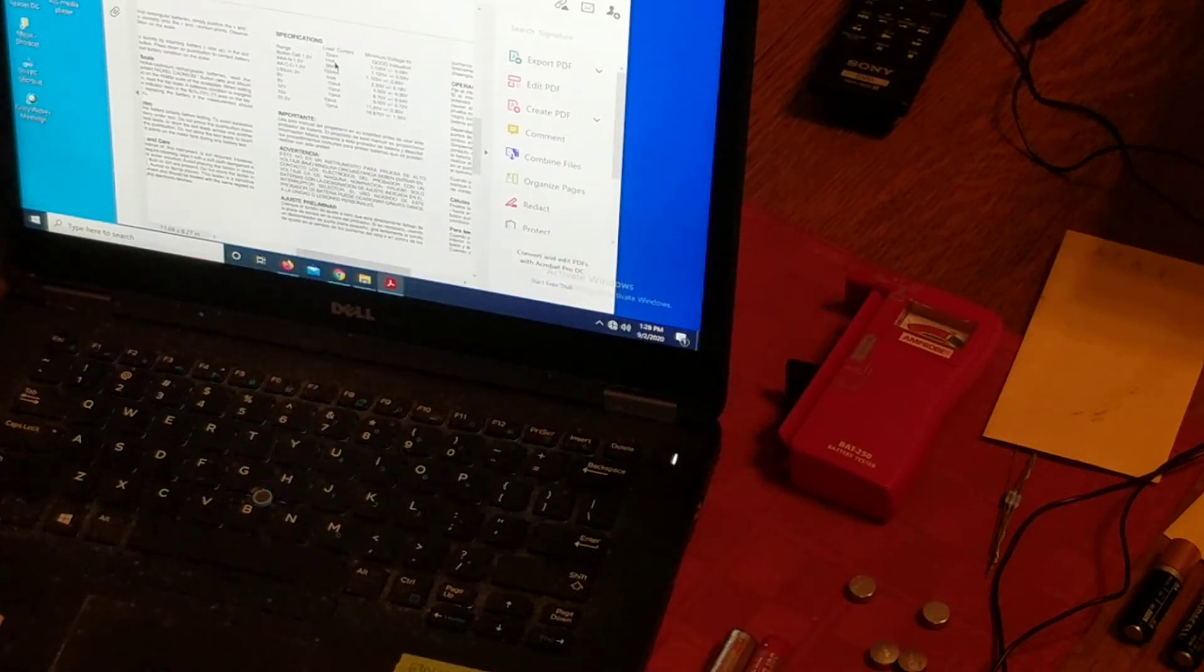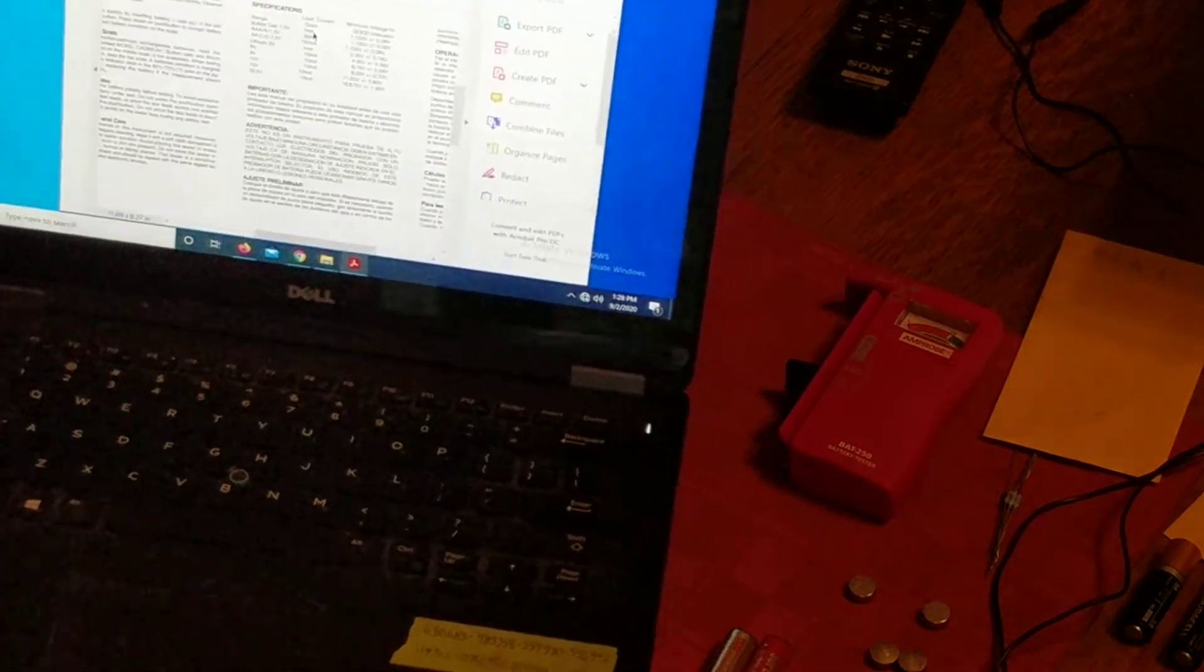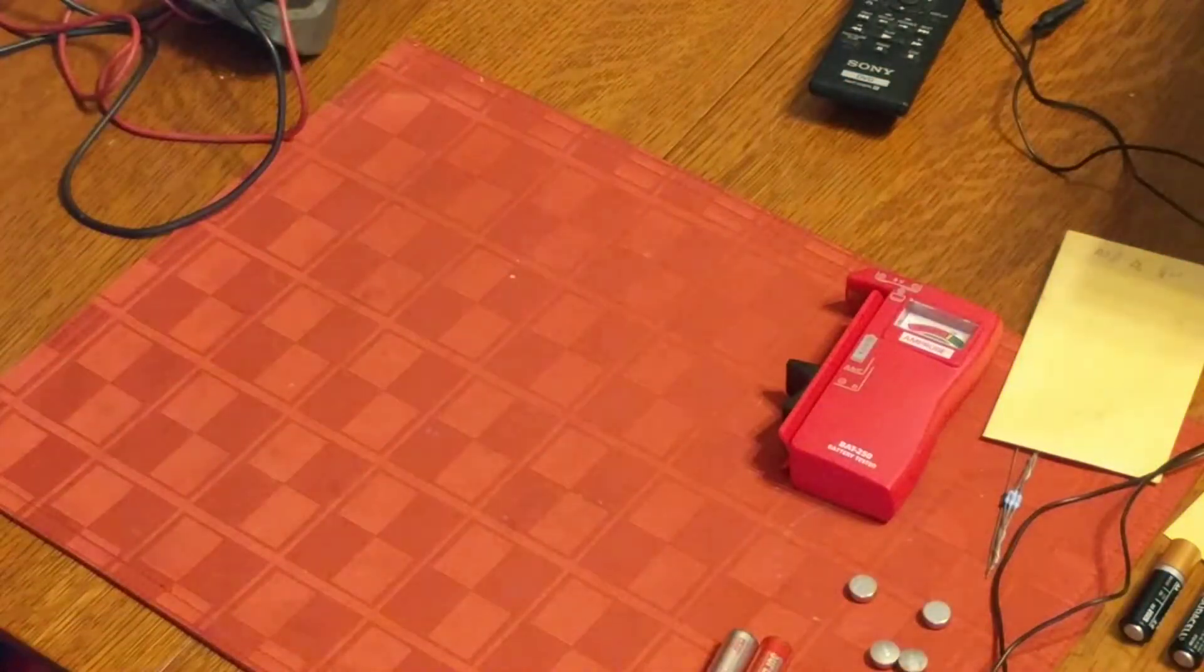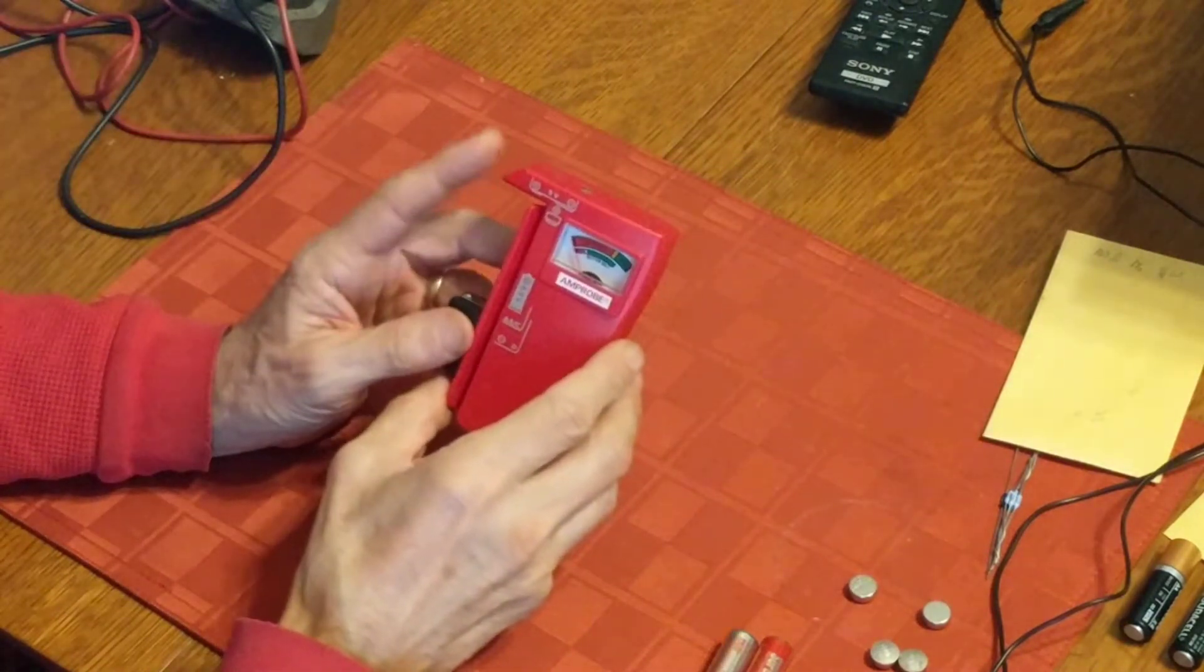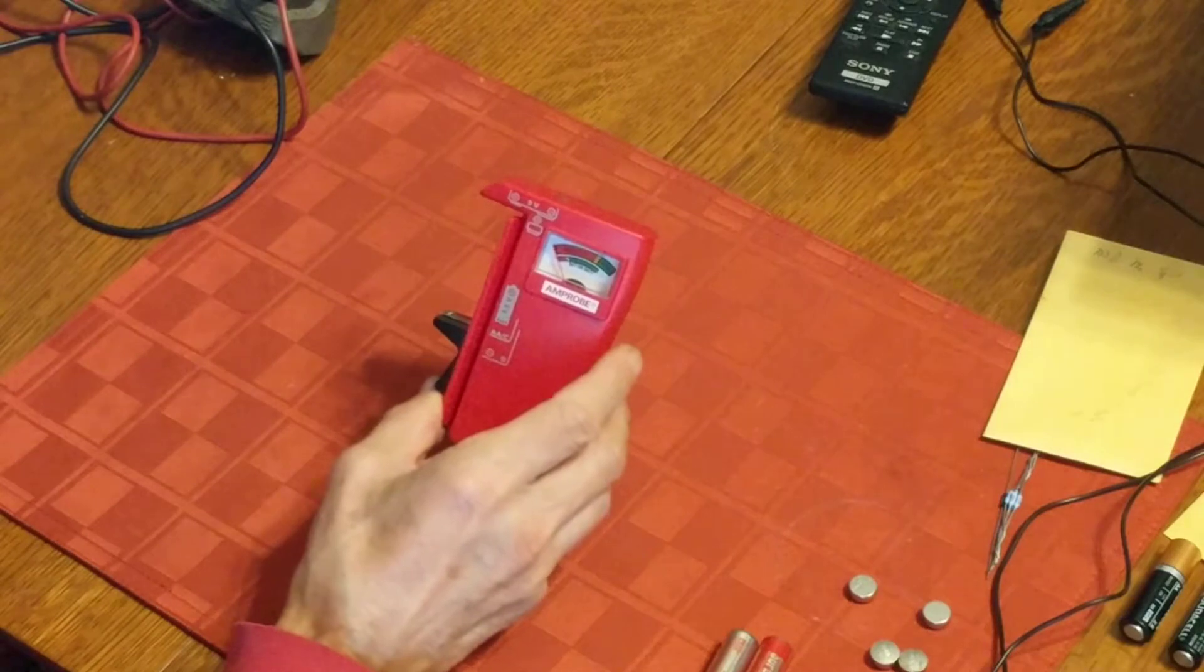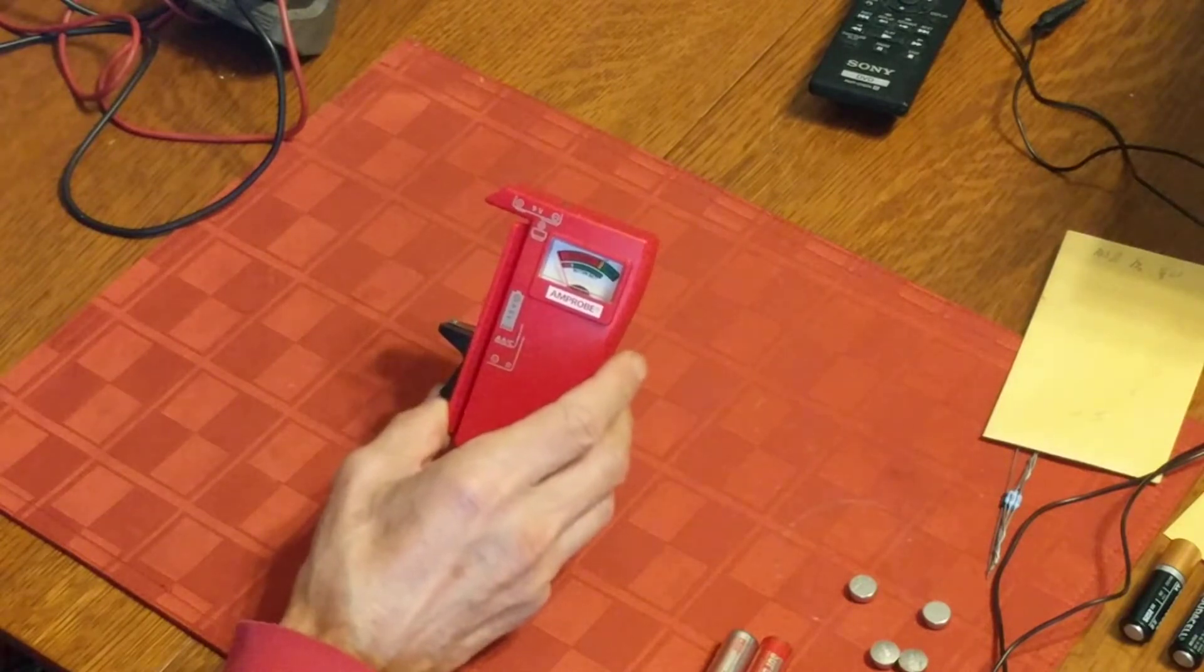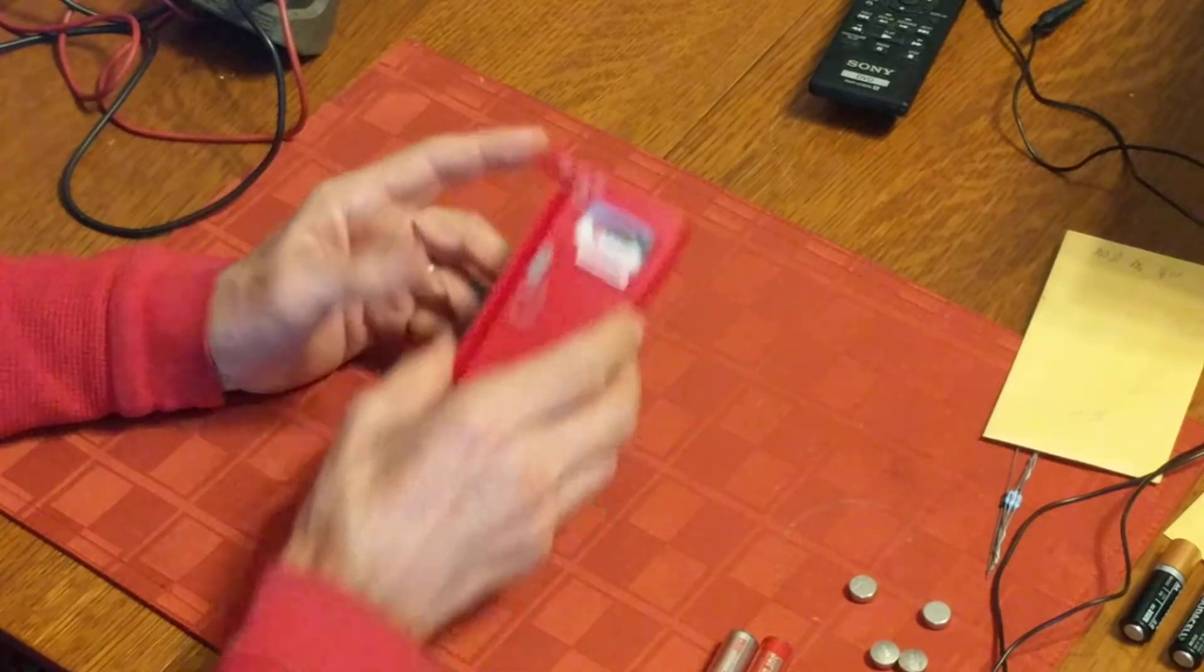So on the button cell the current draw is only 1 milliamp on the Gardner Bender, but it's 350 milliamps on this. Then I kind of realized that to test my button cells I didn't really want to be using this battery tester.